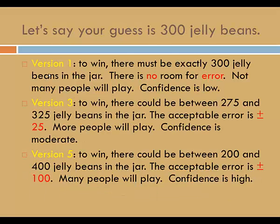Let's say your guess is 300 jelly beans. In version 1, to win, there must be exactly 300 jelly beans in the jar. There is no room for error. Not many people will play. Confidence is low. In the third version, to win, there could be between 275 and 325 jelly beans in the jar. The acceptable error is plus or minus 25. More people will play. Confidence is moderate.